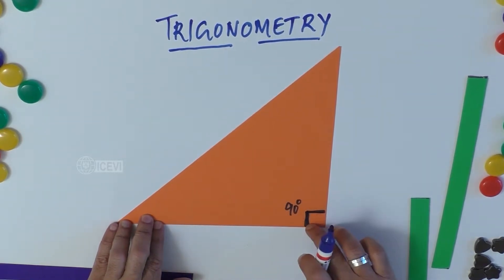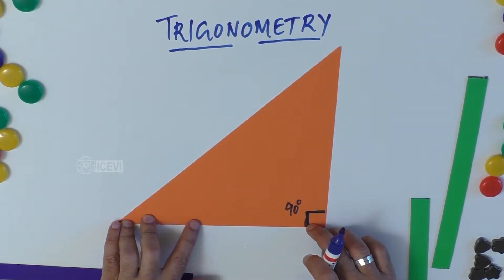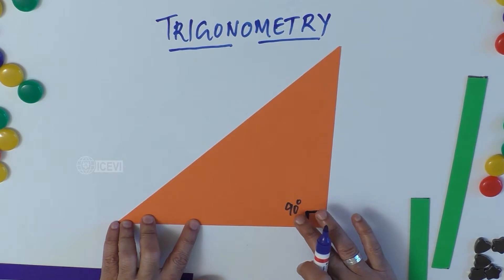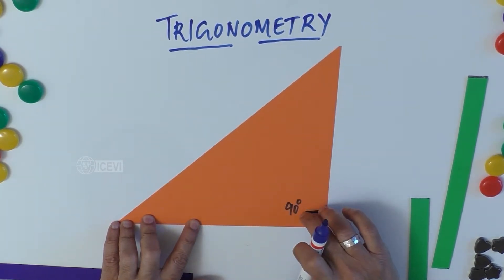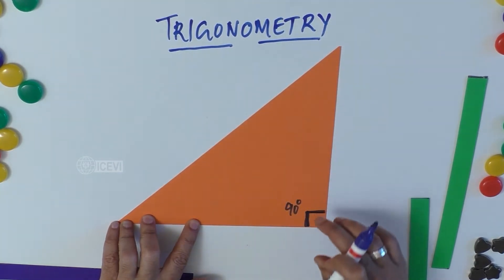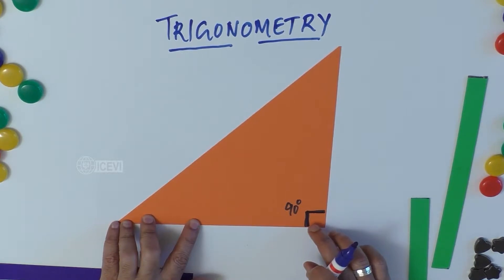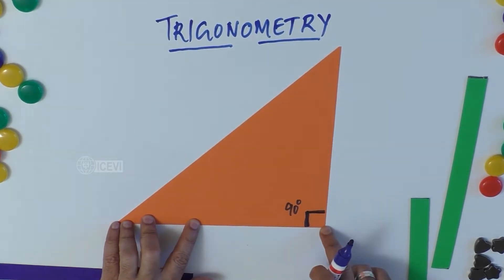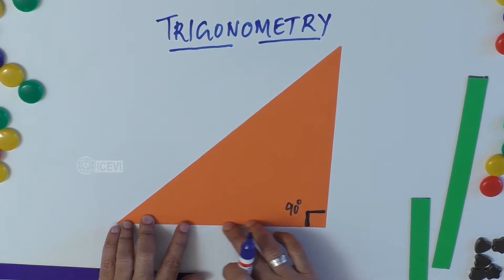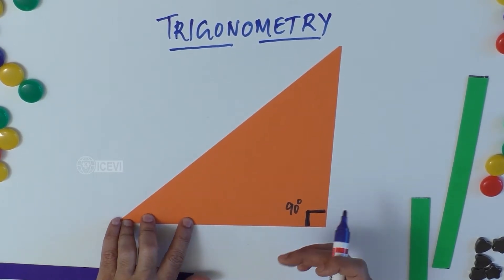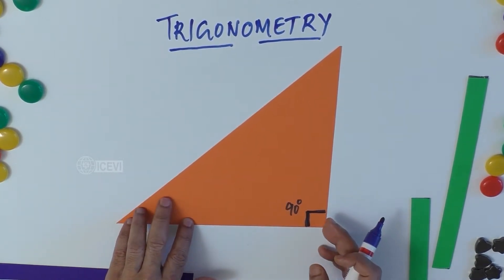In a right angle triangle, we have special names for the sides. The base is called the adjacent. The side opposite to the 90-degree angle is the hypotenuse. The other side, meeting at the right angle, is called the opposite. So we deal with adjacent, opposite, and hypotenuse.